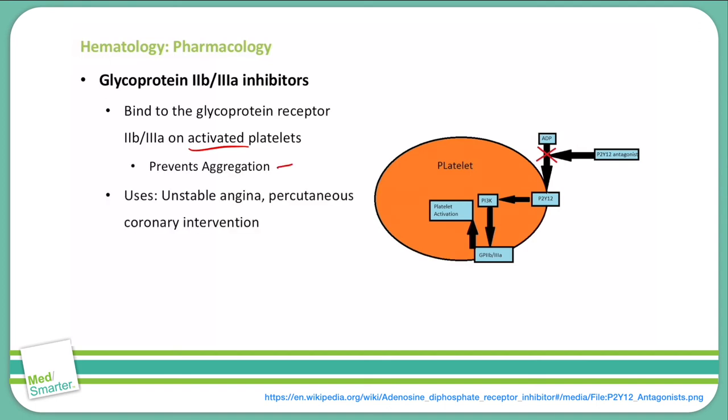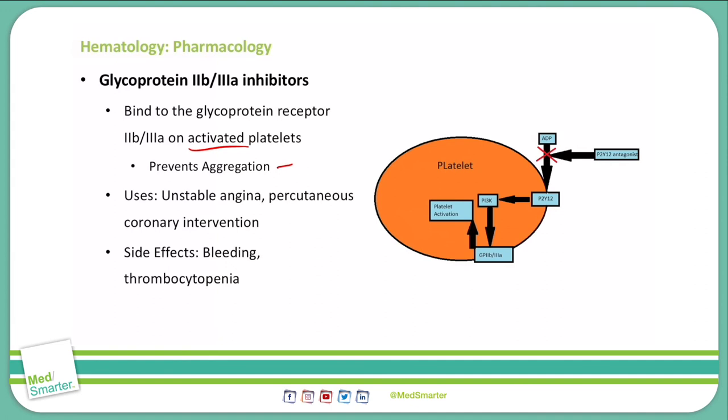This is used in unstable angina and during percutaneous coronary intervention. Side effects include bleeding as well as thrombocytopenia. Examples of our glycoprotein 2B3A inhibitors include abciximab, eptifibatide, and tirofiban.